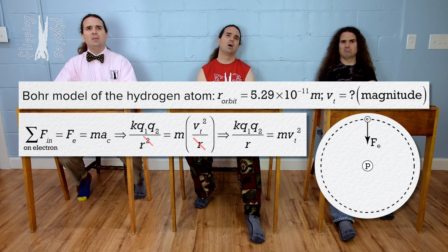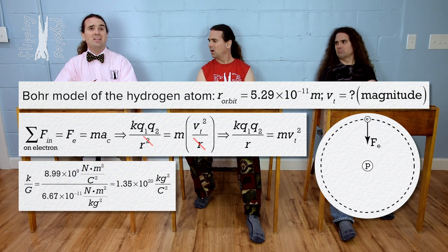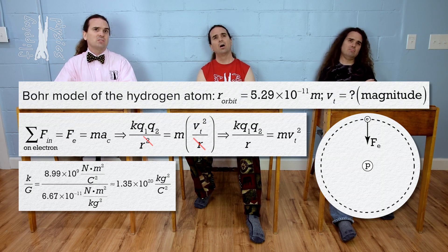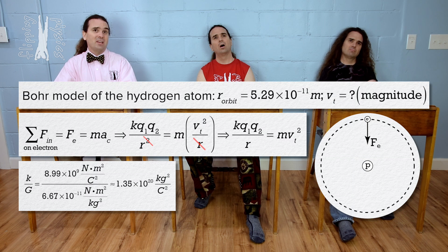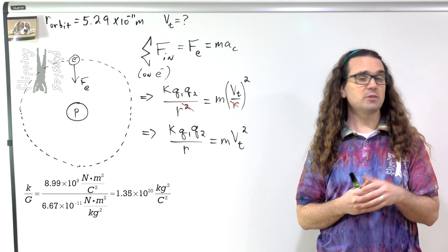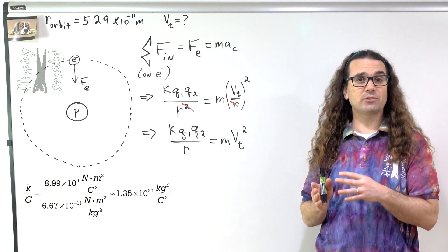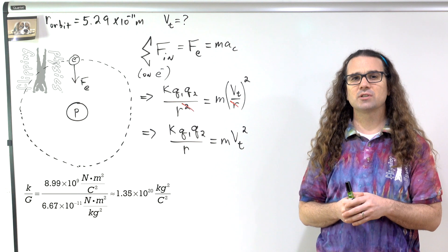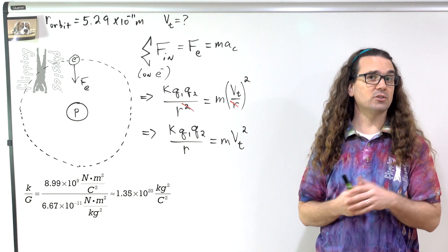Remember when we showed the Coulomb constant was way larger than the universal gravitational constant? I think the point there was that the electric force is so much larger than those gravitational forces that we can ignore them. Right, Mr. P? That is correct, Billy. When it comes to electric forces between atomic particles, often gravitational forces are so small they are negligible.